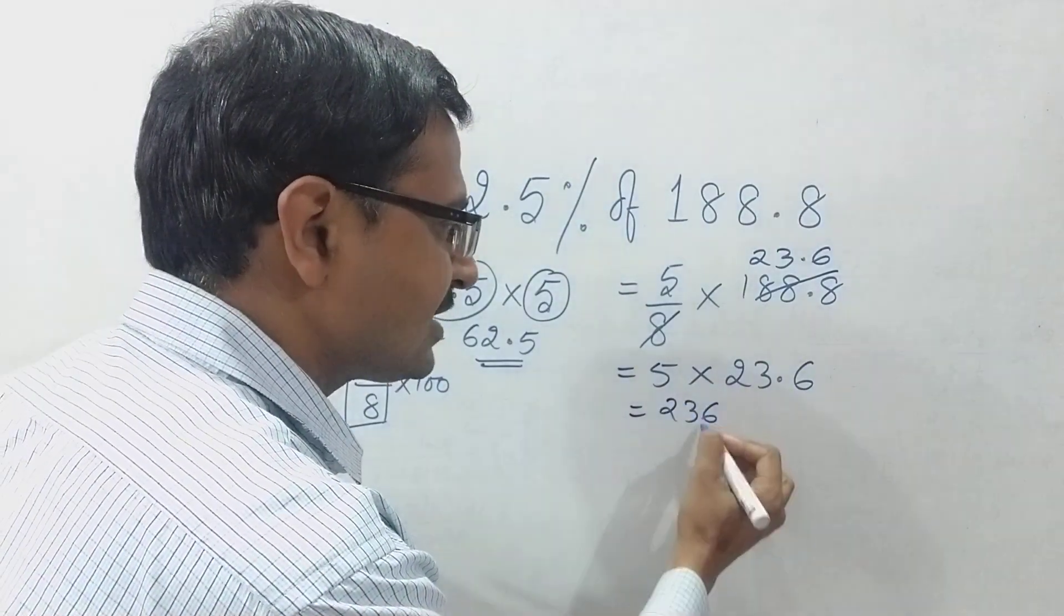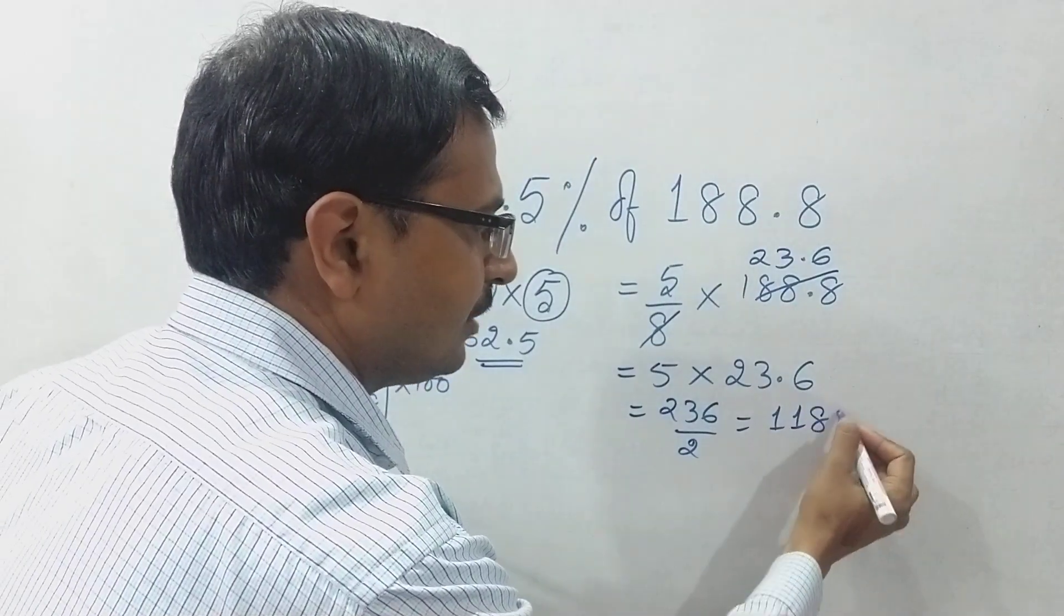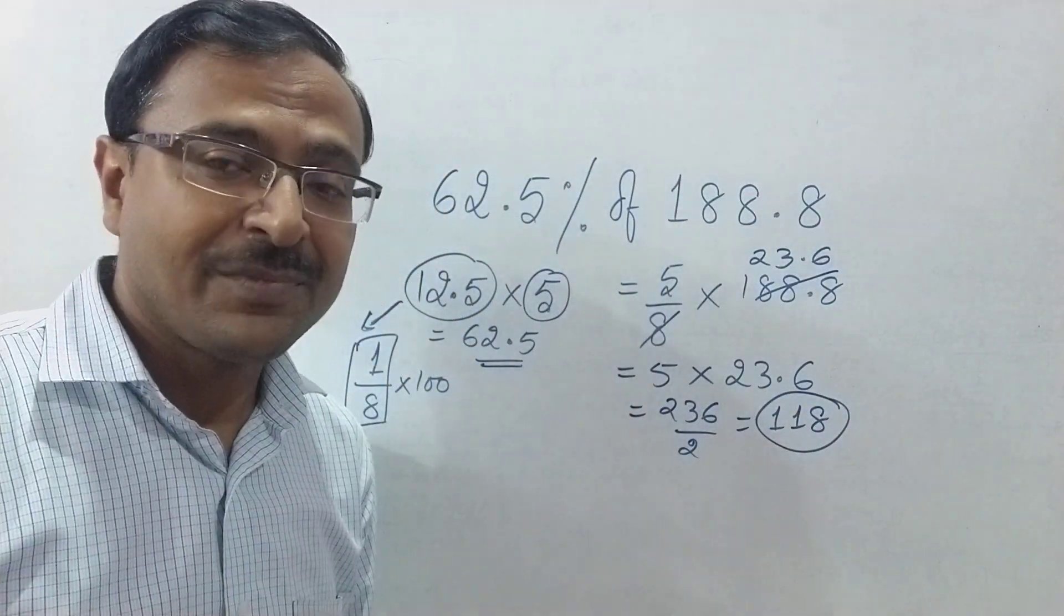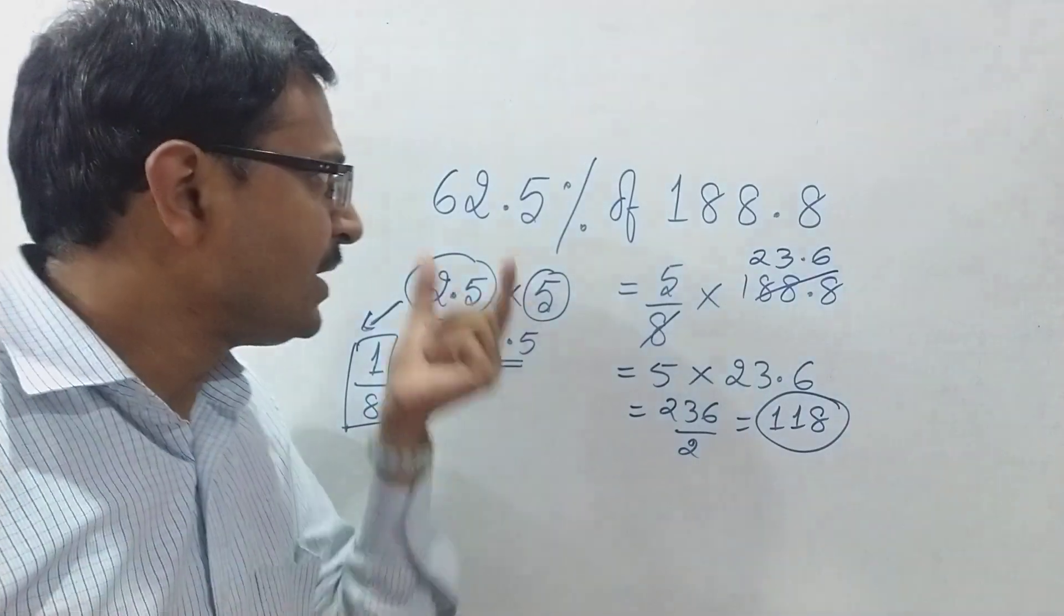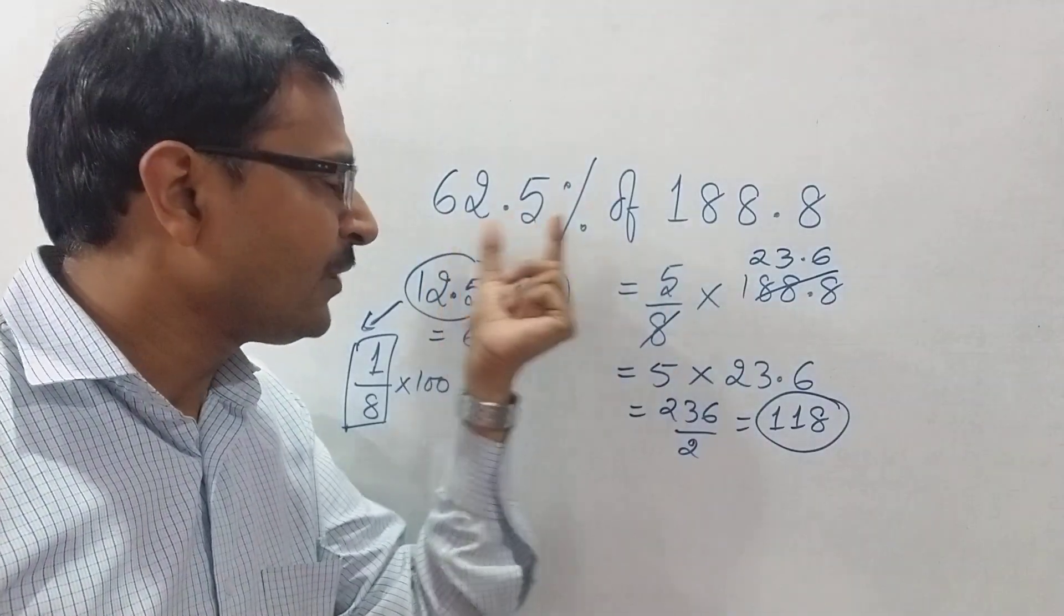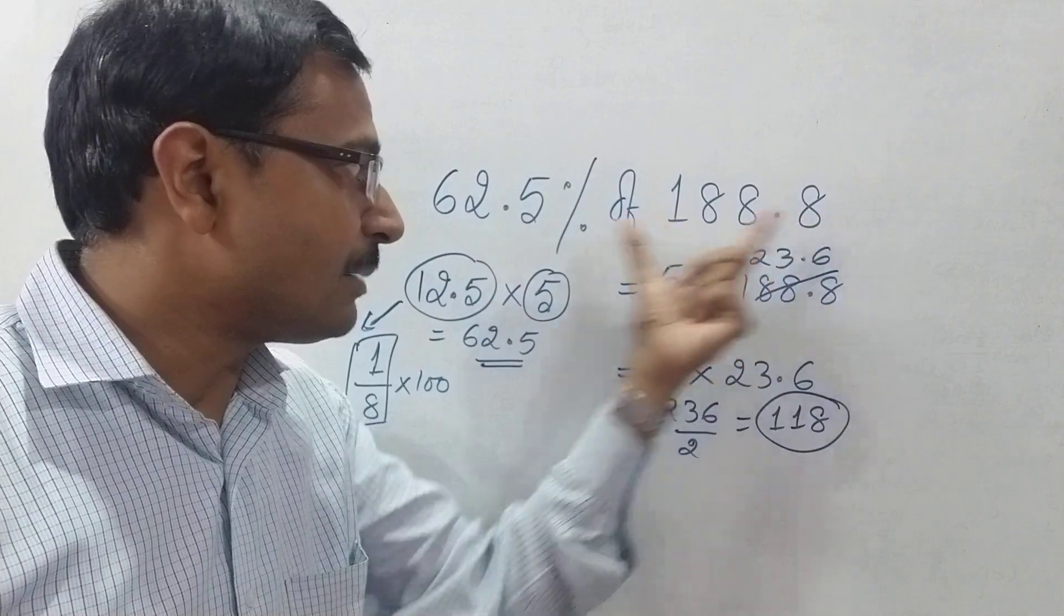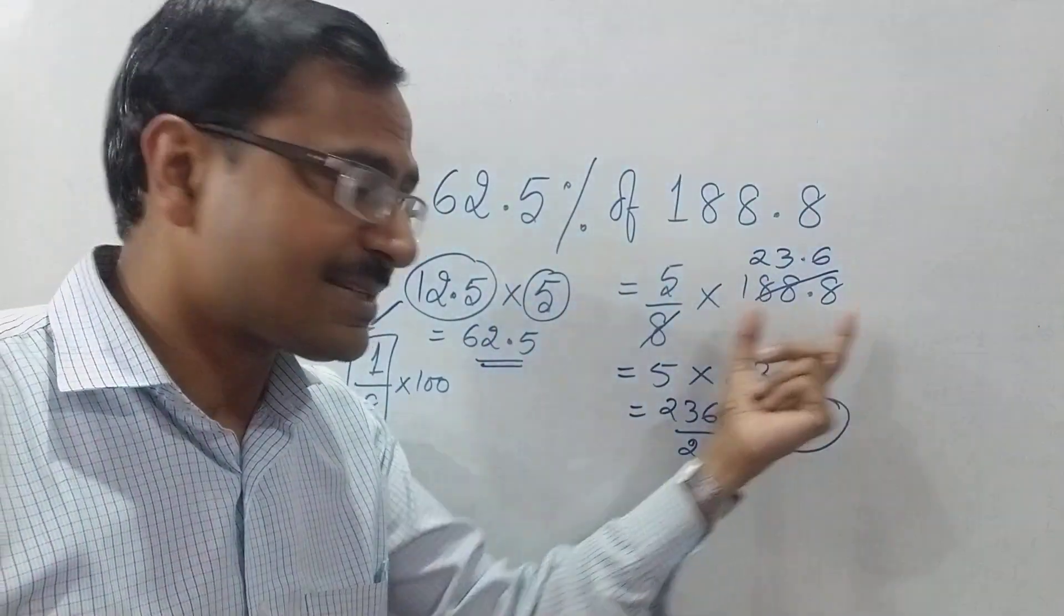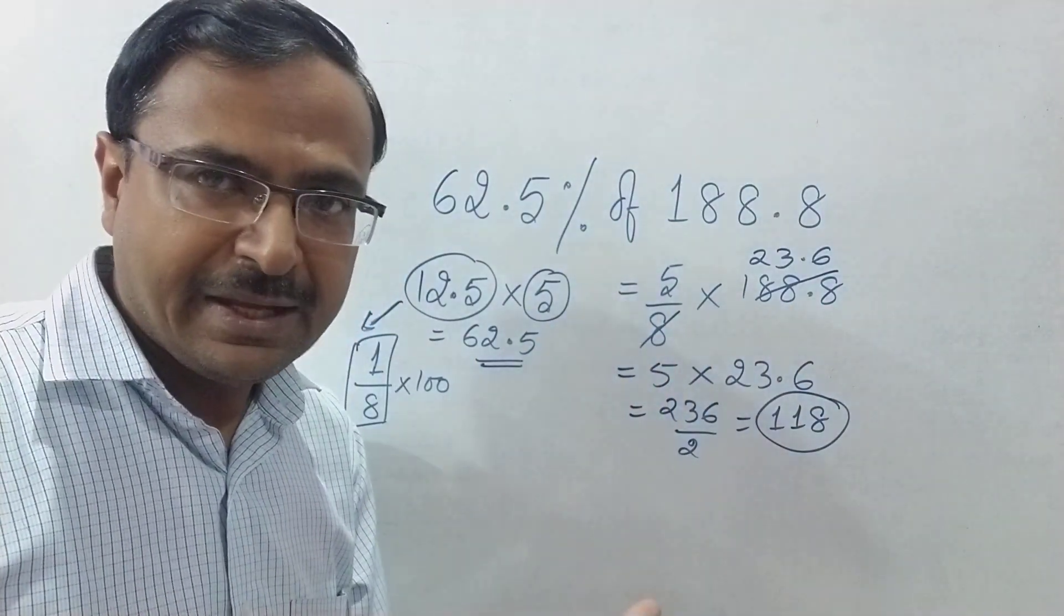So this is 236, half of that is 118. So 118 is the answer. Now how do we do this very quickly? If you see this directly, you should know it is 5/8, and immediately the thought should come to your mind that you have to divide this number by 8. That division will take 2-3 seconds because it is exactly divisible. Multiplication by 5 is hardly any time consuming.